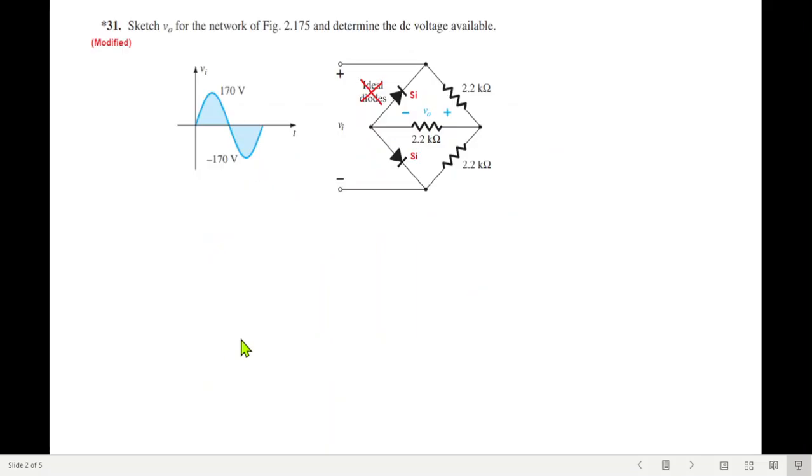So let's see. So this is the input, peak 170, positive negative. And we will consider only the positive half first of all. That means the input will be positive 170, positive at the top, negative at the bottom.